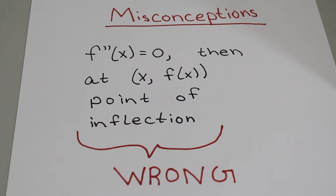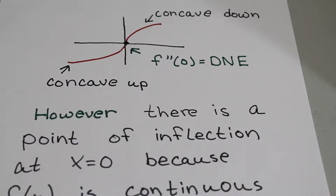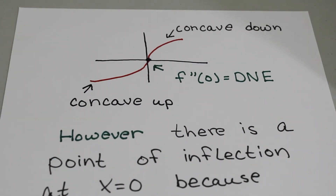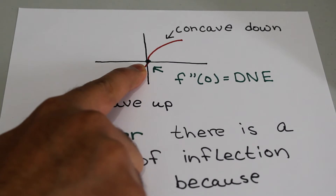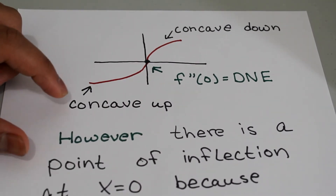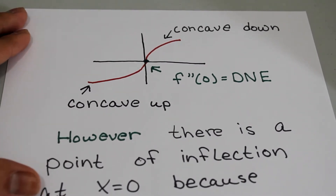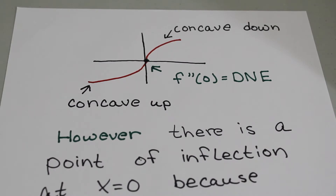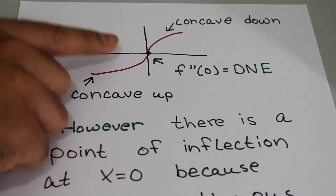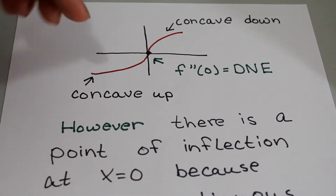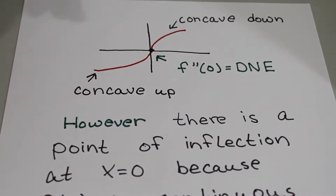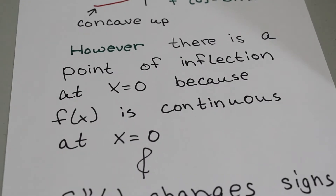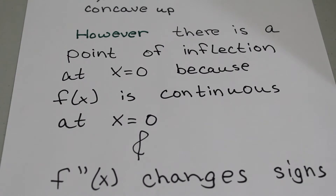Let me show you why. In this first example, f'' does not equal 0 — it's undefined at x = 0. But the curve is concave up when x is less than 0 and concave down when x is greater than 0. Since the function is continuous and the second derivative is changing signs, there is a point of inflection at x = 0 even though f'' is not equal to 0.